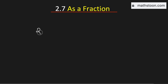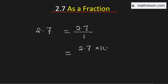In this video we will write 2.7 as a fraction. See that it can be written as 2.7 over 1. Now to remove this decimal we need to multiply 2.7 with 10, because there is only one digit after the decimal, and we also need to multiply with 10 in the denominator. So it will be equal to 27 over 10.